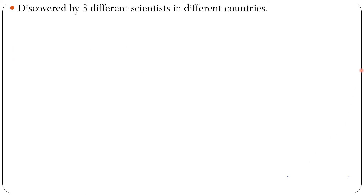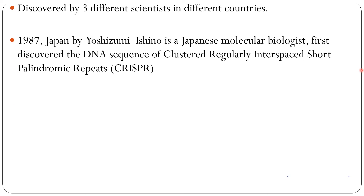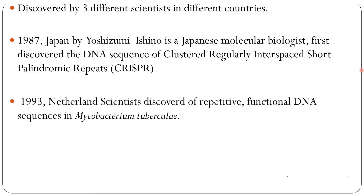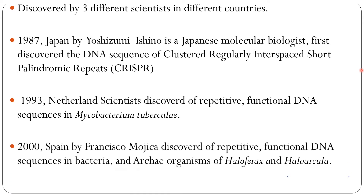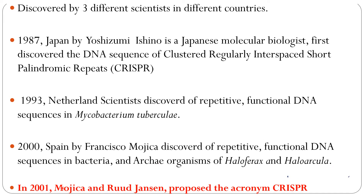Let us look at the history of CRISPR. It was discovered by three different scientists in three different countries at separate times. It was first discovered in 1987 by Japanese scientist Yoshizumi Ishinu. Then again in 1993, it was discovered by Netherlands scientists in Mycobacterium tuberculosis. The third time it was discovered in Spain by Francisco Moica, who found these repetitive functional DNA sequences in archaea organisms Halobacterium and Haloarcula.